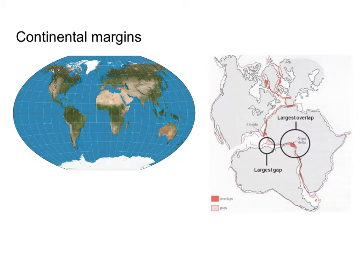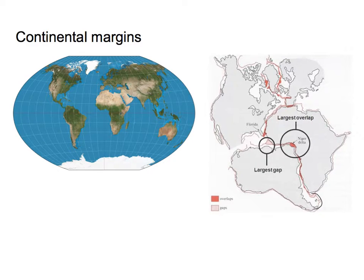He spent time documenting the patterns we've all talked about seeing. The fit of the continents actually works a little bit better if you use continental margins rather than coastlines — that's what's plotted here. For example, South America has a continental margin under the ocean that extends out from the coastline, and things fit even better when you take those structures into account.